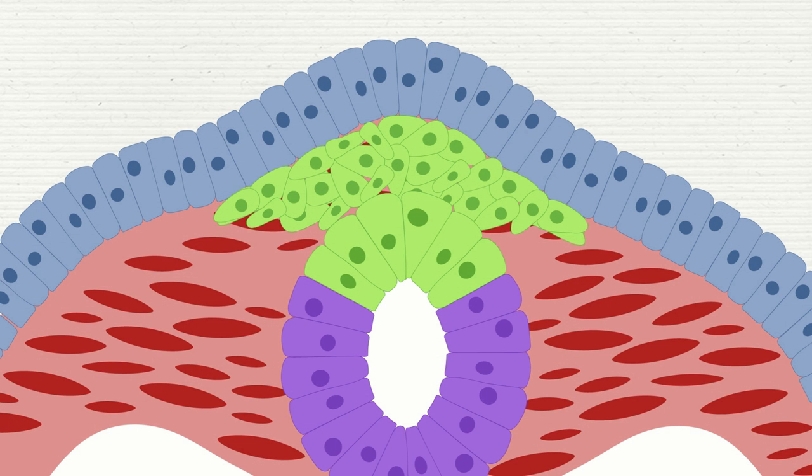Once formed, the neural crest cells undergo epithelial to mesenchymal transition, start delaminating into separate cell populations, and attain migratory qualities.